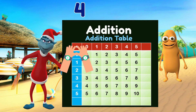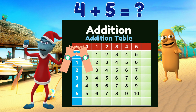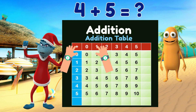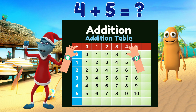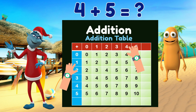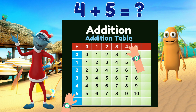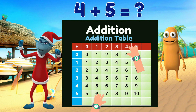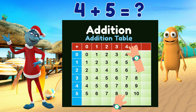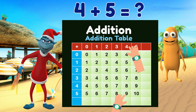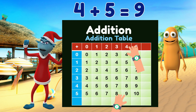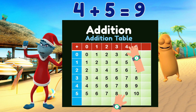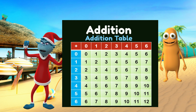Now try a different set of numbers — let's try four plus five. You know the drill: move your right hand along the top row to four, then move your left hand down the leftmost column to five, and lastly move your left hand along the same row to the column where your right hand is pointed. The answer is nine. Yes, four plus five equals nine!